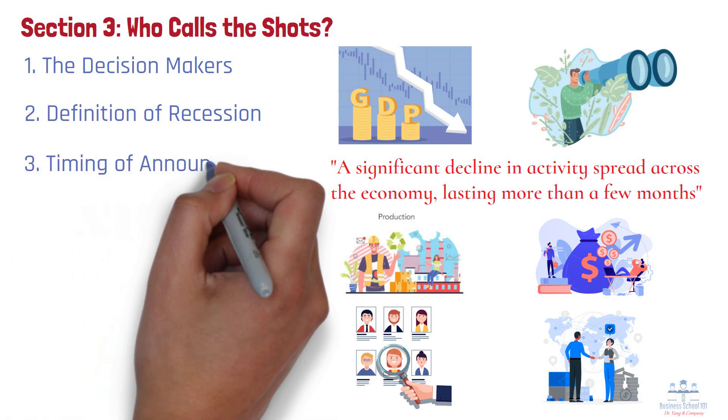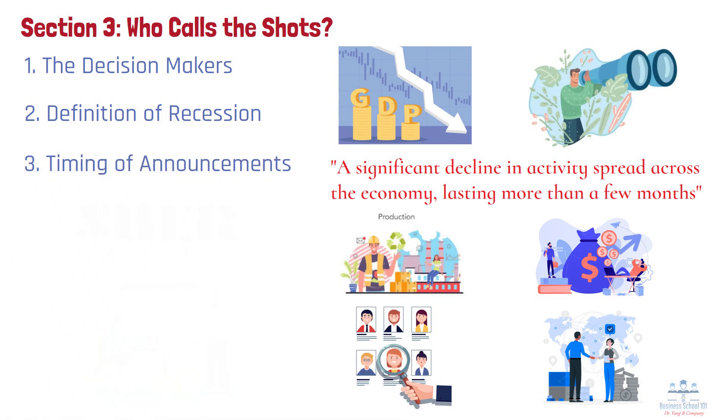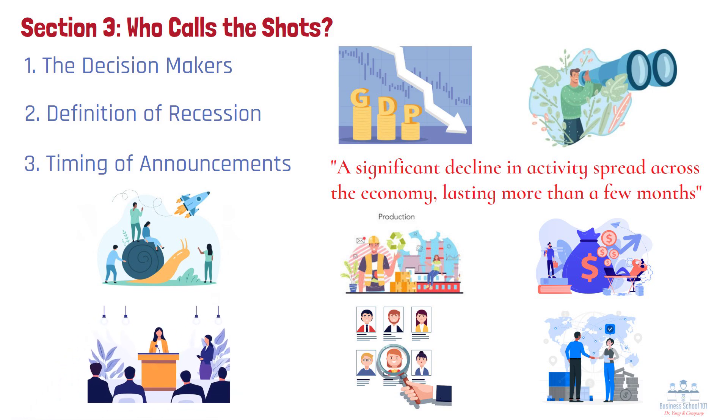Number 3: Timing of Announcements. The NBER is usually pretty slow in making these announcements. For example, they didn't announce the December 2007 recession until November 2008, almost a year later.